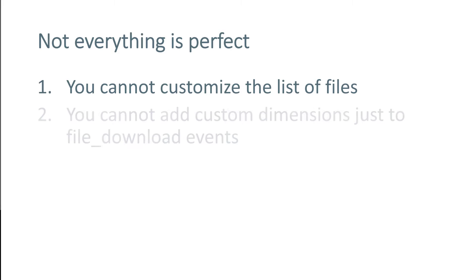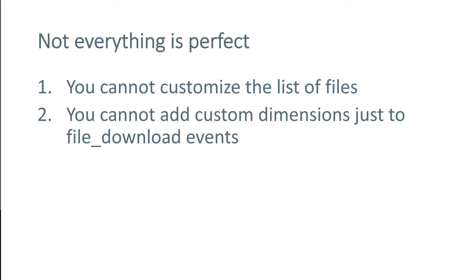Another limitation that might be a problem is if you want to send a custom dimension just with a file download event — you won't be able to do that using Enhanced Measurement. When using Enhanced Measurement, you can set custom dimensions at the main tracking code level. So for example, you can send the page category, but the same value would be applied to all Enhanced Measurement events like outbound clicks and others. If you want to send something specific with the file download event, like whether it's an ebook, a white paper, or a checklist, you'll need a custom solution.